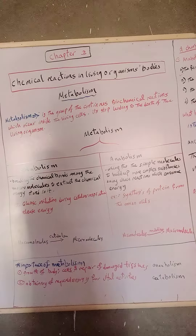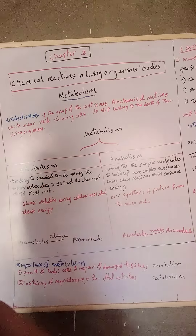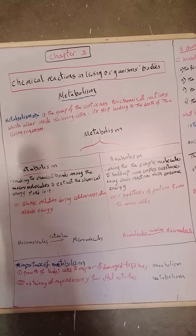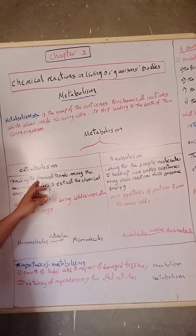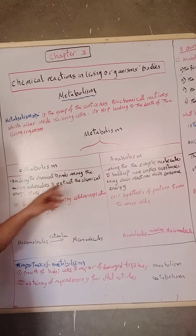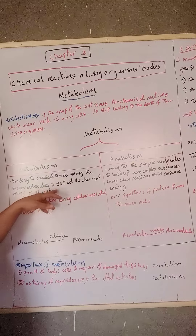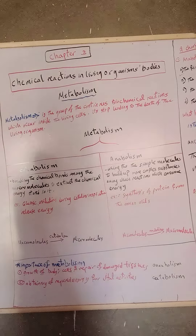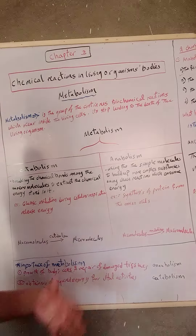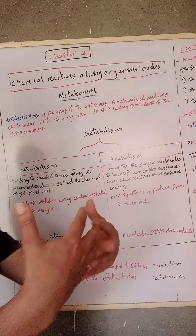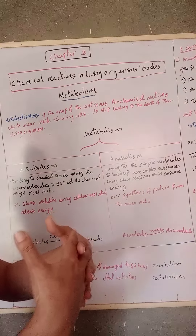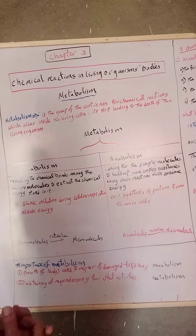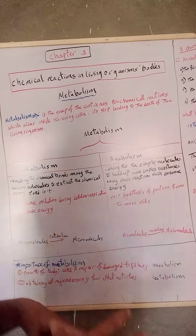There are two types of metabolism: catabolism and anabolism. Catabolism is the breaking of the chemical bonds among the macromolecules to extract the chemical energy stored in them.